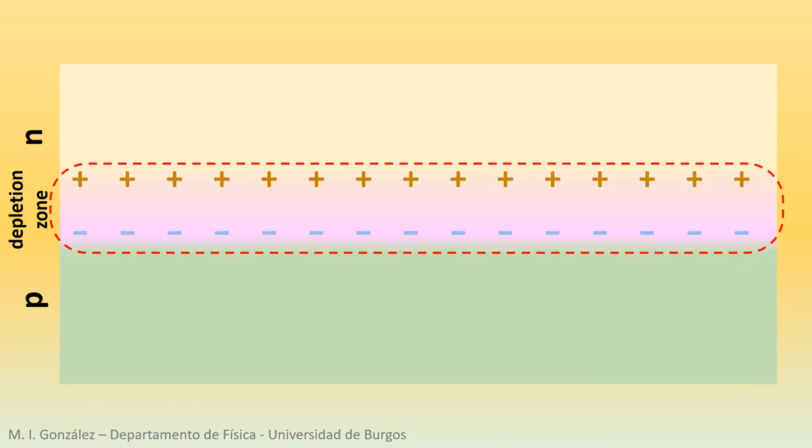The charges in the depletion region create an electric field, just like the one existing between the plates of a capacitor. The field originates a voltage across the depletion zone. It is about a few tenths of a volt.